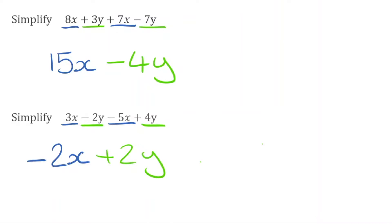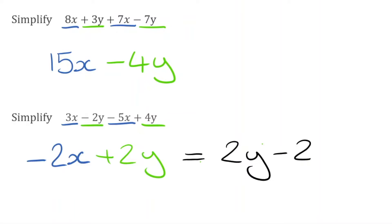What we can do with this one as well, just to make it look a bit neater — instead of having negative 2x plus 2y, we can flip them around. So that's the same as saying 2y take away 2x, just so that we don't have that negative at the beginning. It means exactly the same thing.